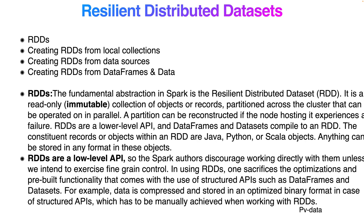RDD is an abstraction in Spark. It is a Resilient Distributed Dataset — a read-only, immutable collection of objects or records partitioned across the cluster that can be operated on in parallel. A partition can be reconstructed if the hosting node experiences a failure. RDDs are lower-level APIs.